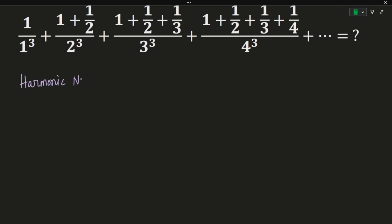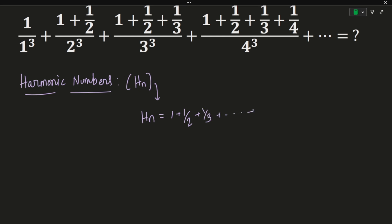You have all learned about the harmonic series. The harmonic number H_n is defined as follows: H_n = 1 + 1/2 + 1/3 + ... + 1/n, meaning H_n simply denotes the sum of the reciprocals of the first n natural numbers, where n belongs to the natural numbers. H_1 is defined as 1, since it is the sum of only the first number.